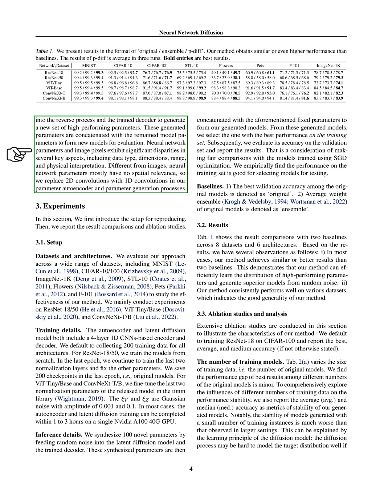Unlike images, neural network parameters don't usually have a spatial relationship, which is why we use 1D convolutions instead of 2D in our autoencoder and parameter generation processes.